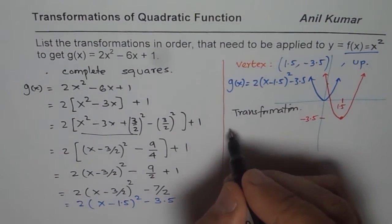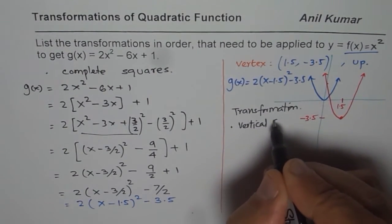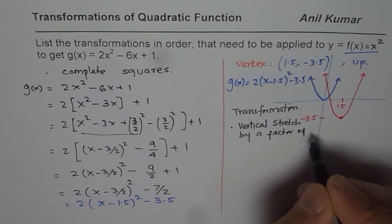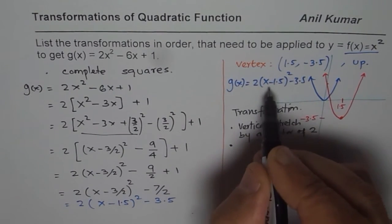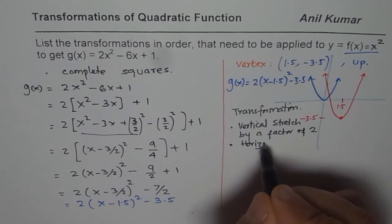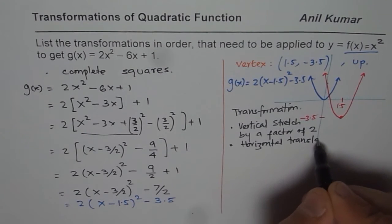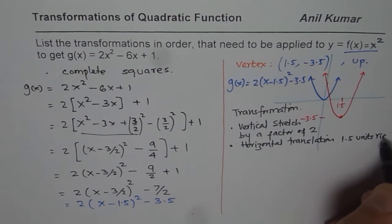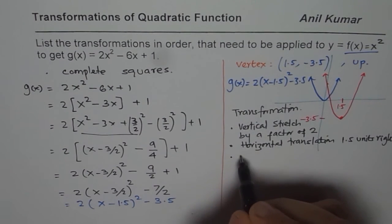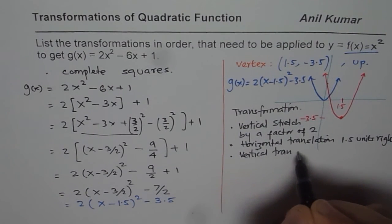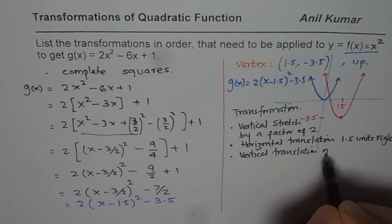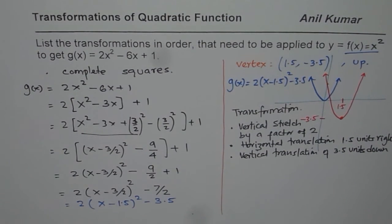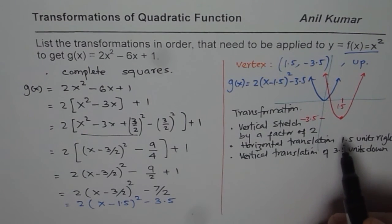Starting from left to right, we say vertical stretch by a factor of 2. And then we have horizontal translation 1.5 units right. And then vertical translation 3.5 units down. So these are the transformations in our function. That is how we could explain the transformation.